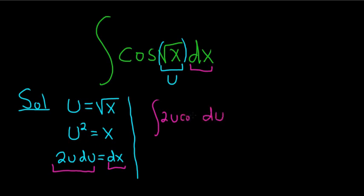What's left is cosine of u. All right, so now we have to integrate this. So there's a couple ways to do it. We can use integration by parts or we can use tabular.